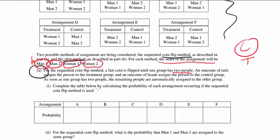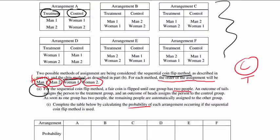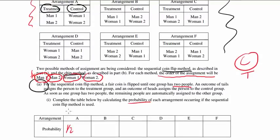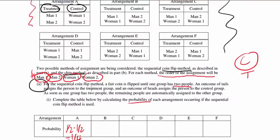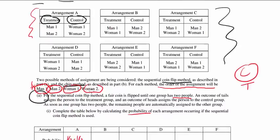Complete the table by calculating the probability of each assignment occurring if the sequential coin flip method is used. For arrangement A, man 1's chance of getting into treatment is one half, and man 2's chance of getting into treatment is one half, so you get one fourth for A. That's easy enough.